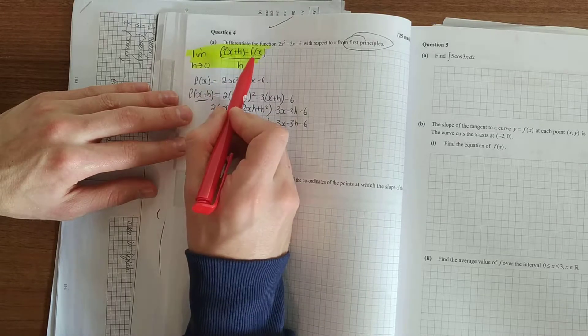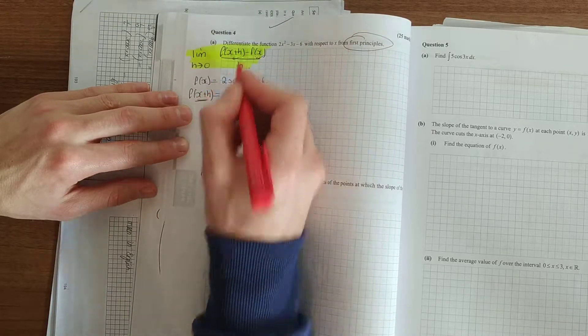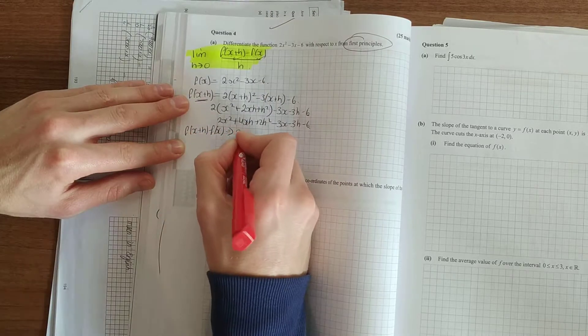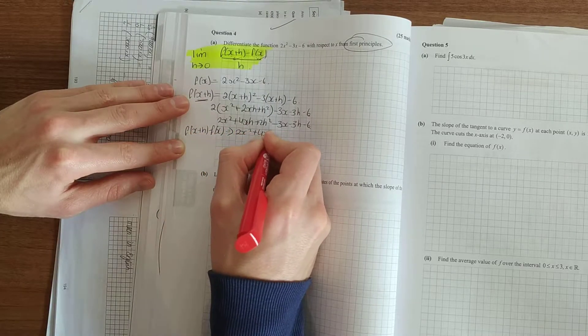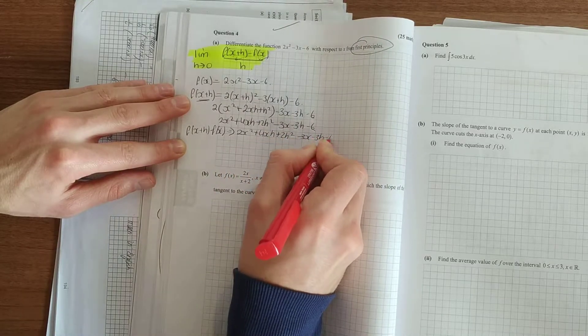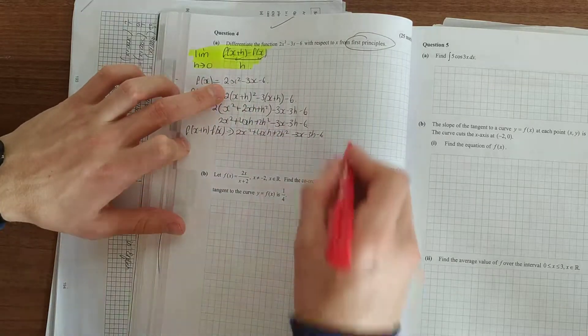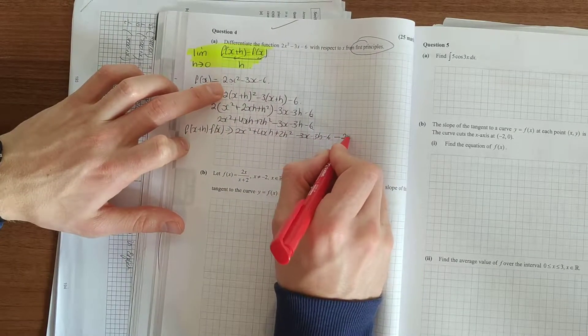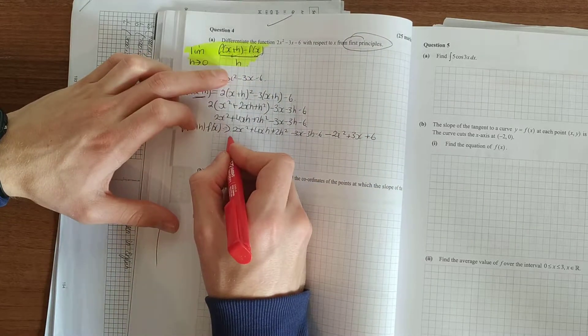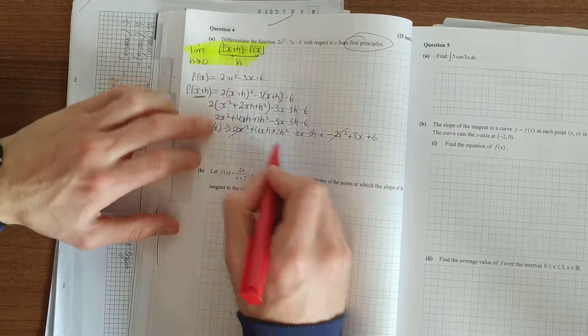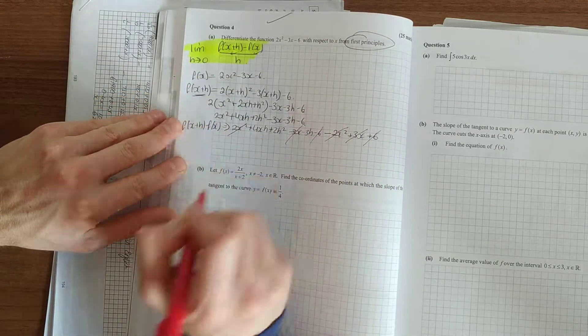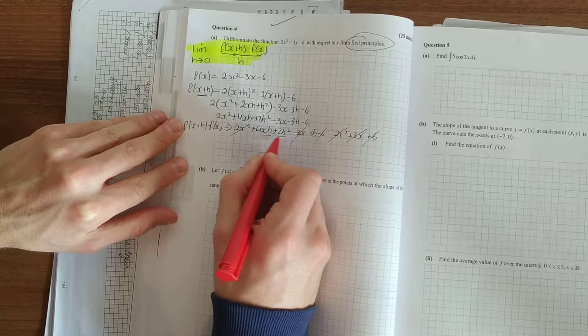Now, so we've got our f(x+h). We've got our f(x). Now subtract them. Here, there will always be canceling. So 2x² + 4xh. Minus all of this. So don't forget to change the sign of everything. Minus 2x². Plus 3x. Plus 6. And your 2x² goes your 2x². Your 3x. Your minus 3x. Your plus 6 and your minus 6. So what you have left with are the following terms.